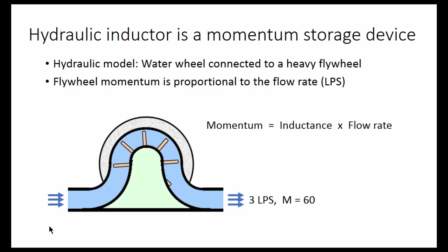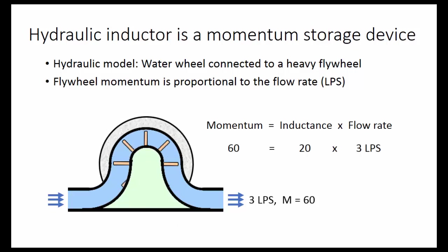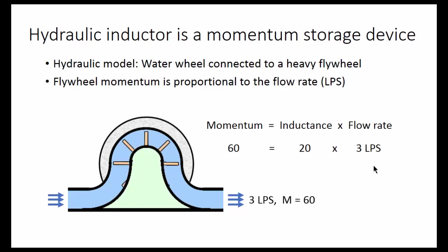The momentum is proportional to the flow rate, and the constant of proportionality is called the inductance. For example, 60 momentum units equals the inductance of 20 units times 3 liters per second.